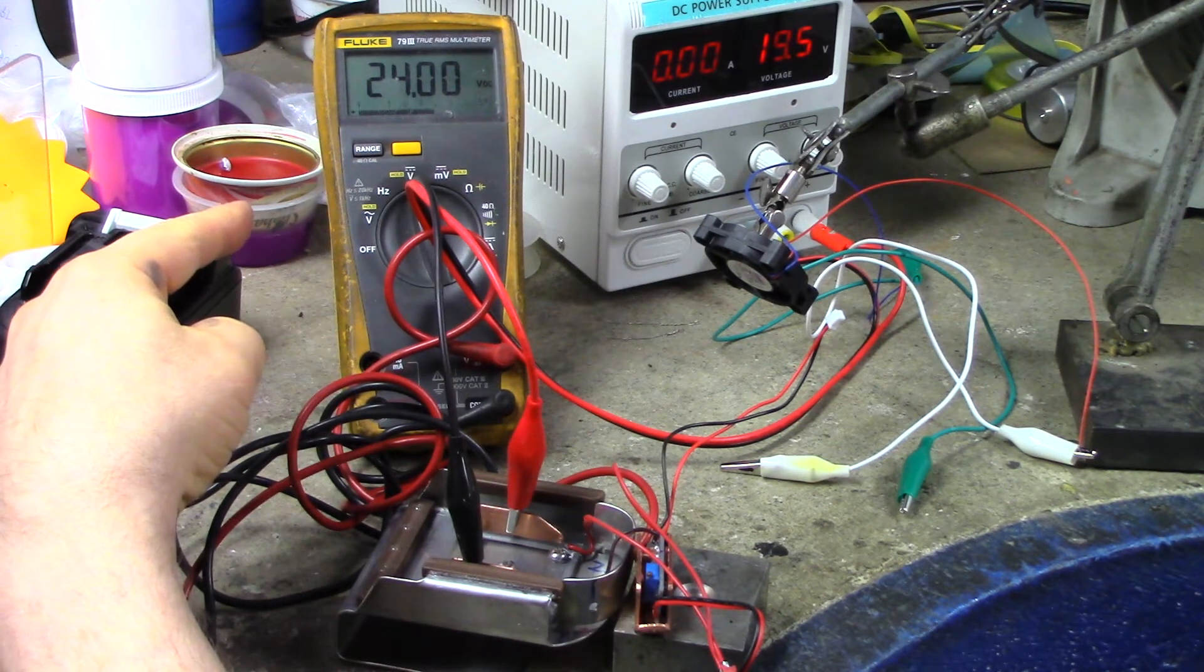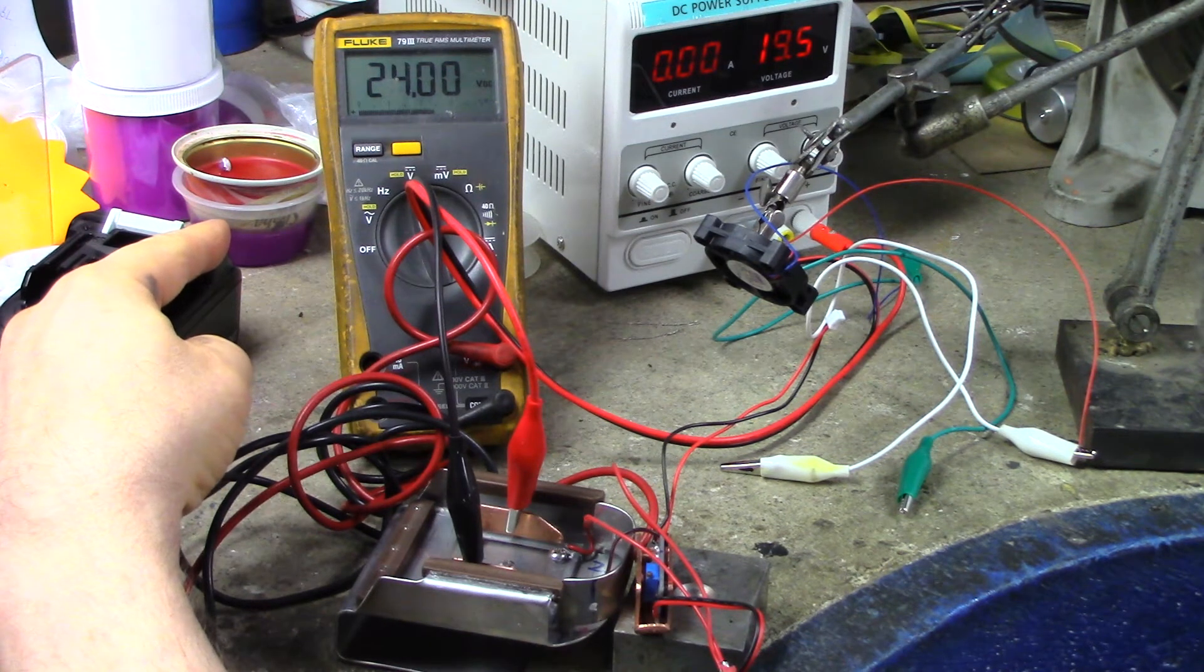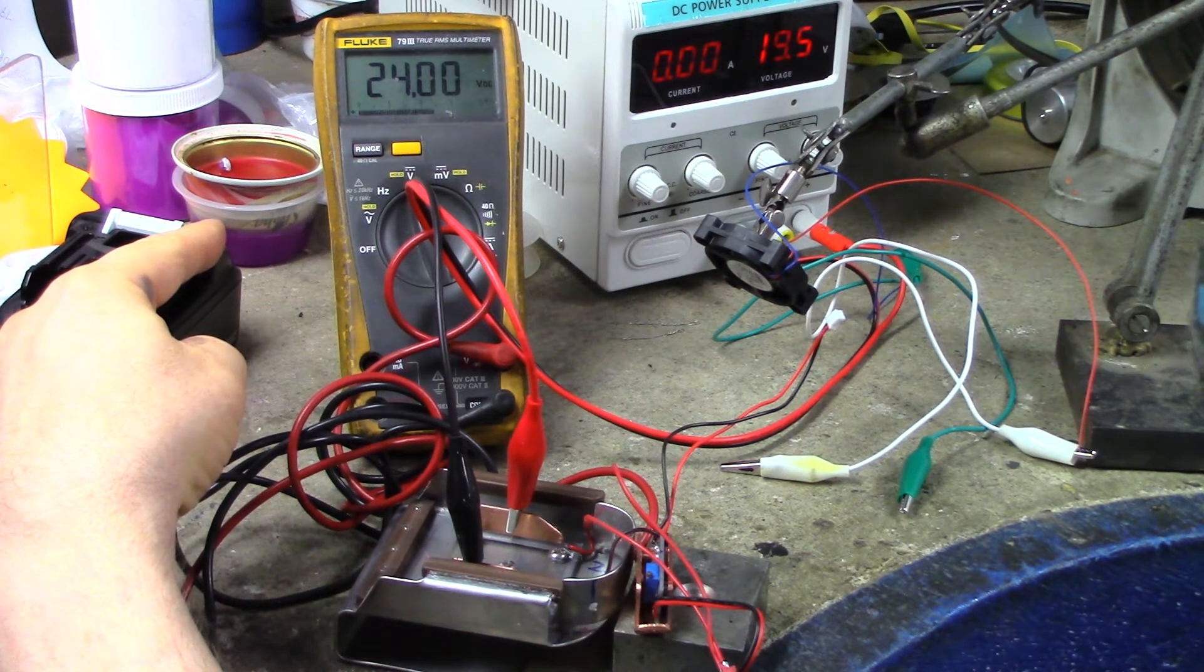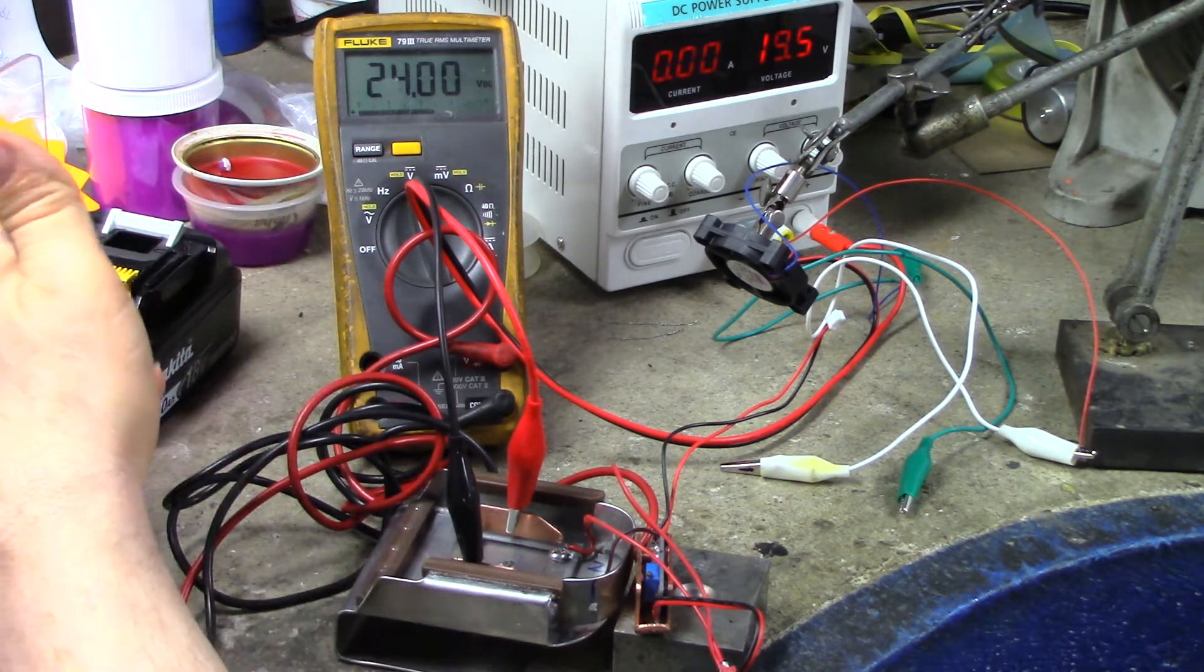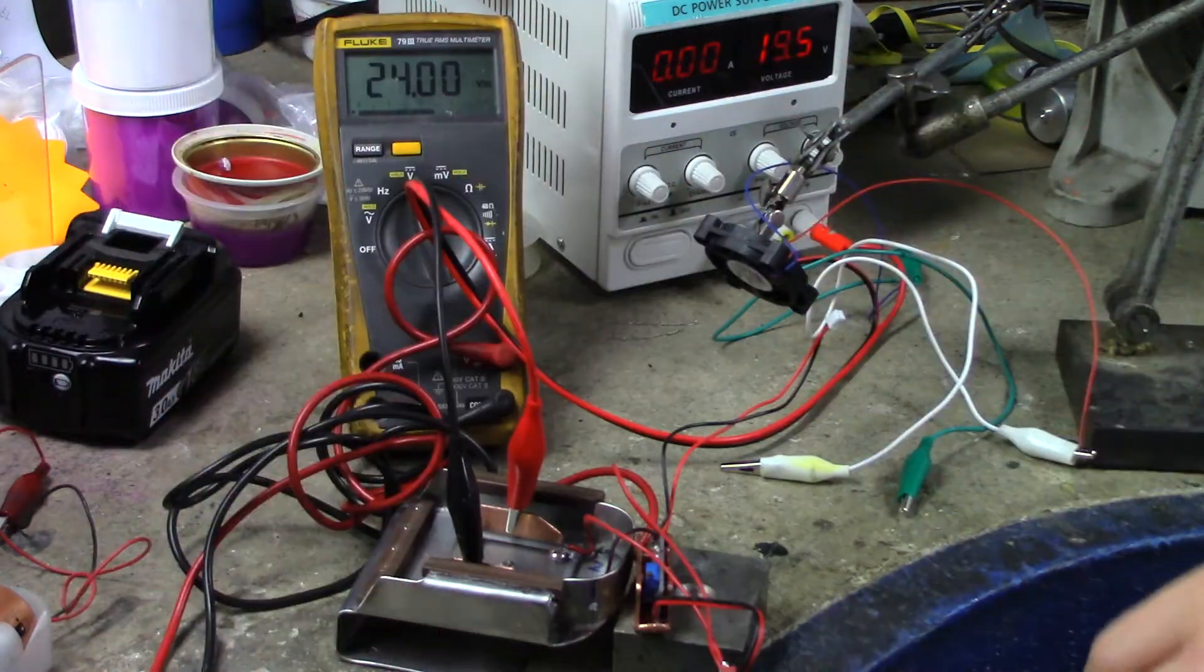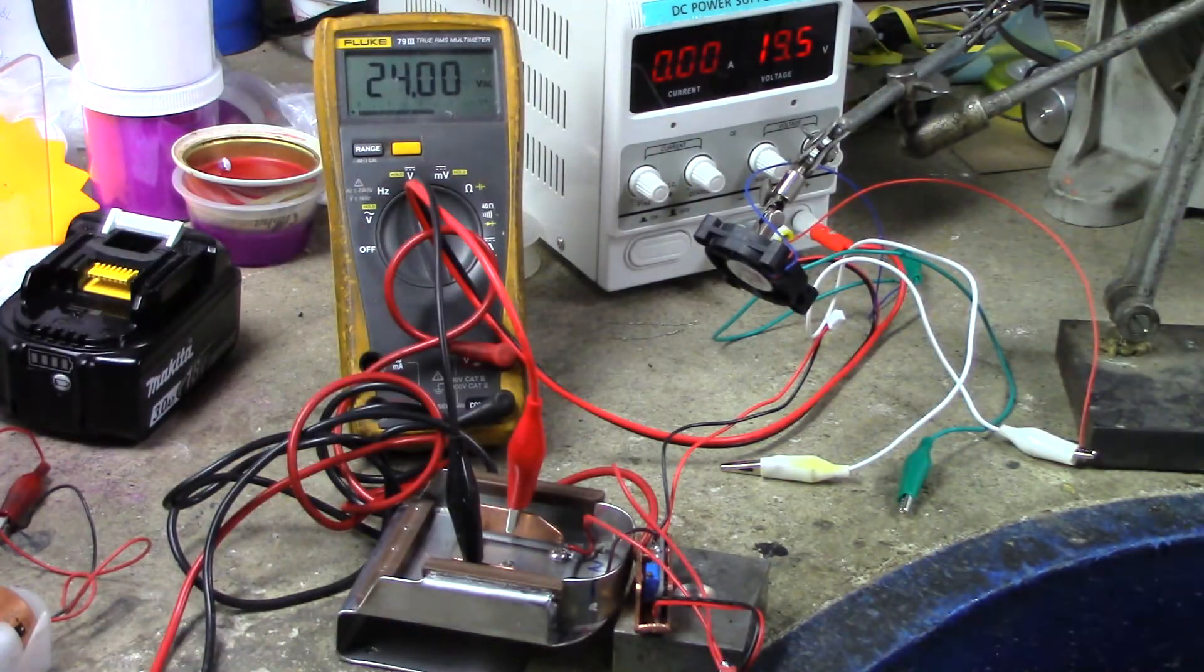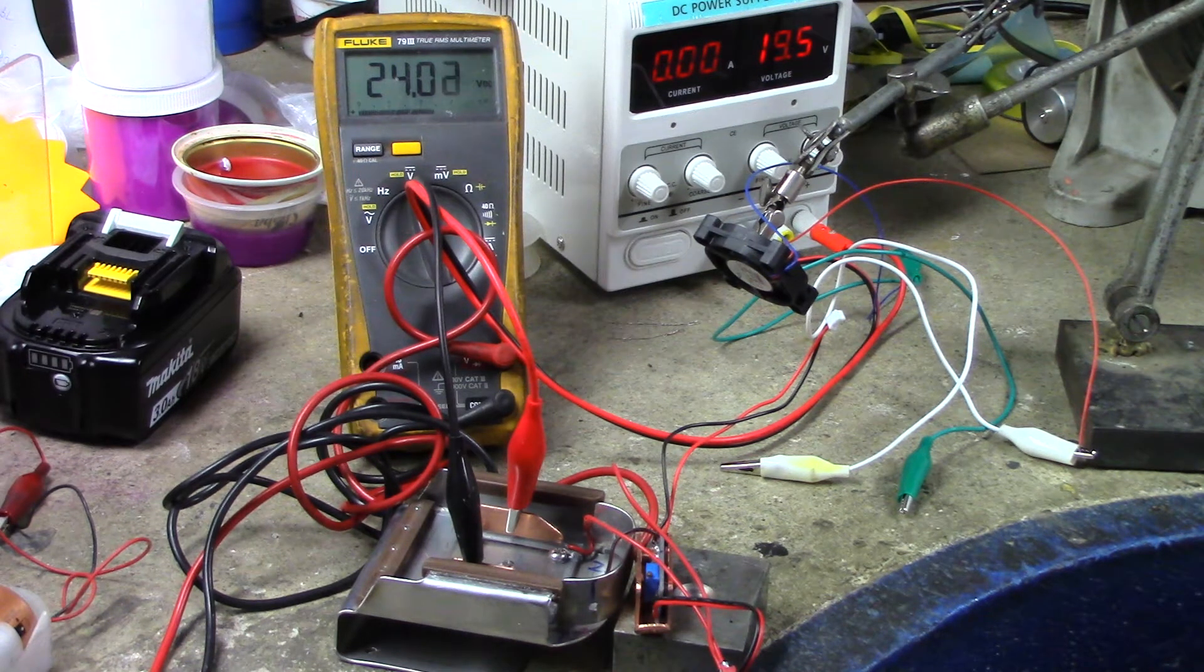The reason I need it to be at 24 is because the buck converter that's now installed in the helmet needs at least three volts to work properly. You know, it reduces the voltage and it has to be reduced by at least three volts in order to work properly. So 24 is good. I got that set at like 21, maybe 20 and a half, something like that.